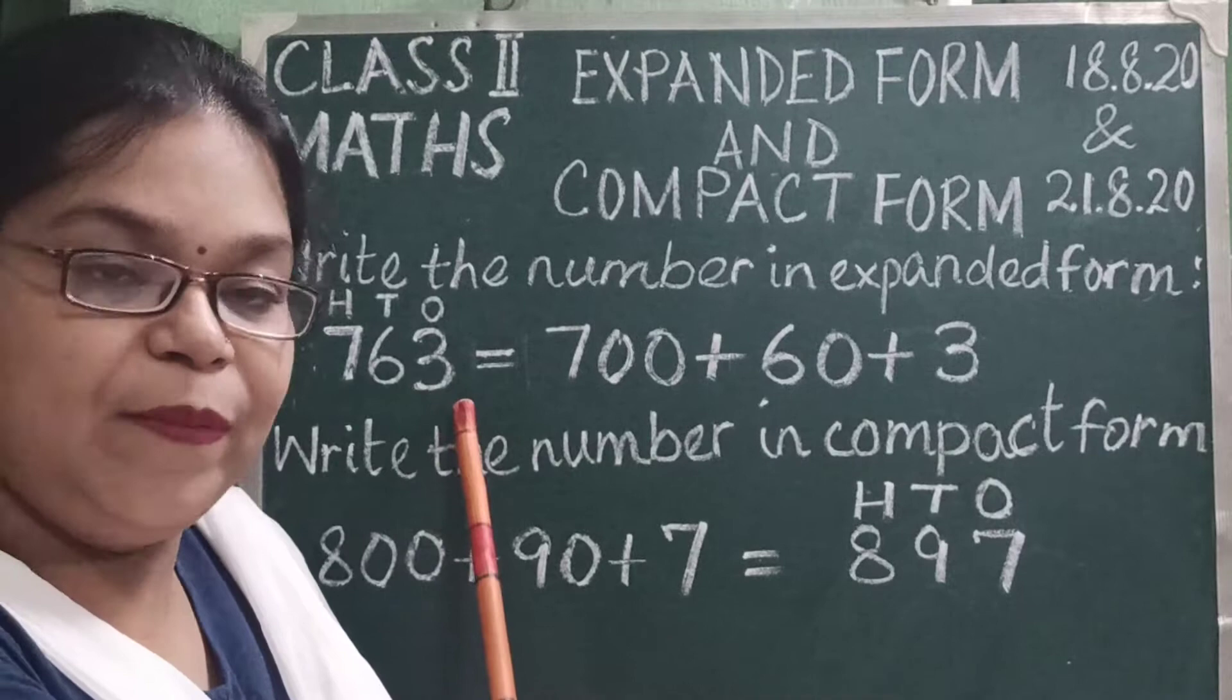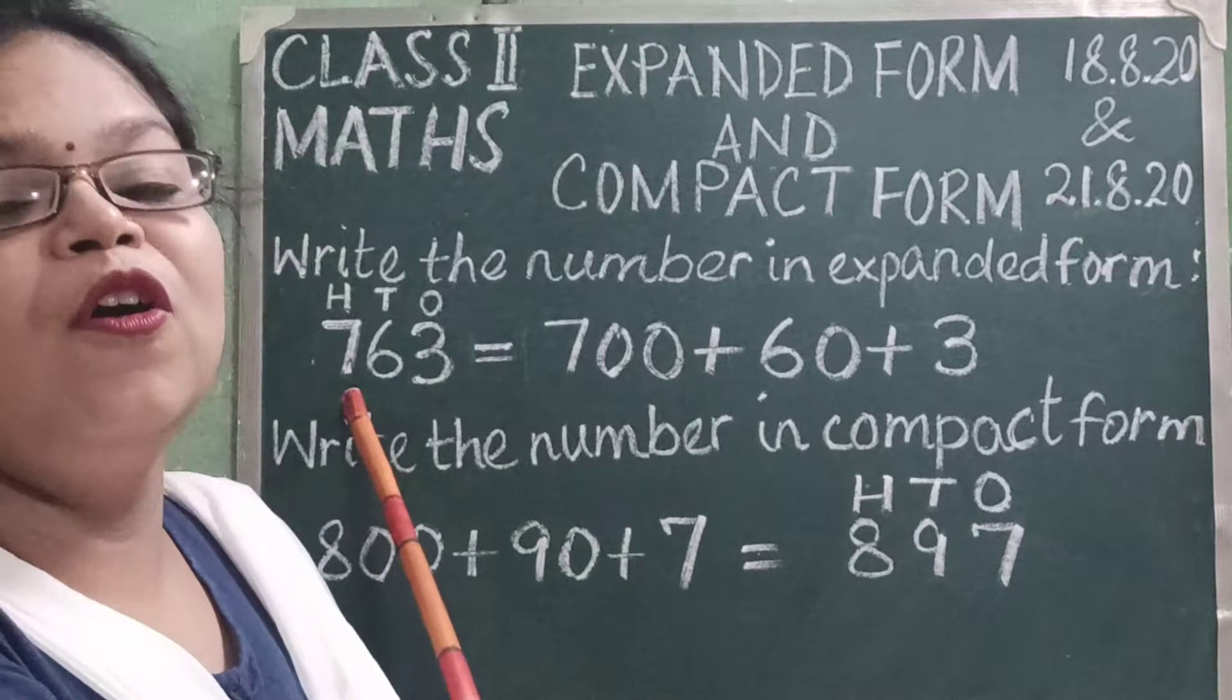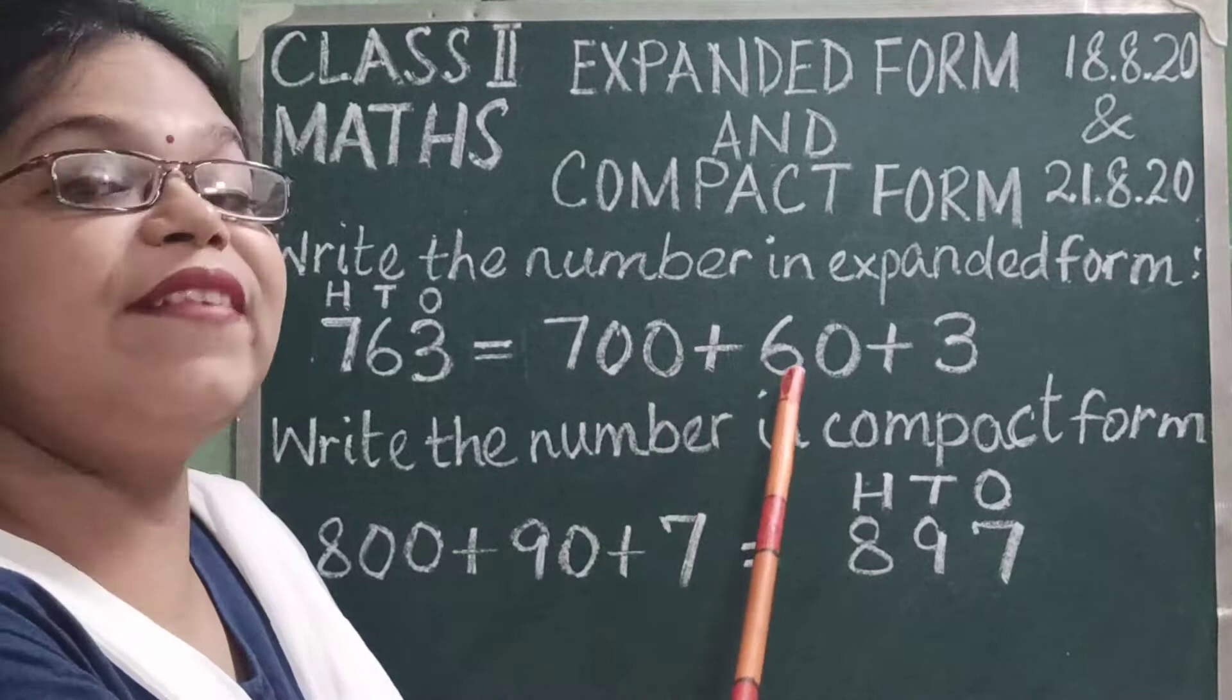3 is under the 1's column, 6 is under the 10's column, and 7 is under the 100's column. So when we break the number, we get 700 plus 60 plus 3.